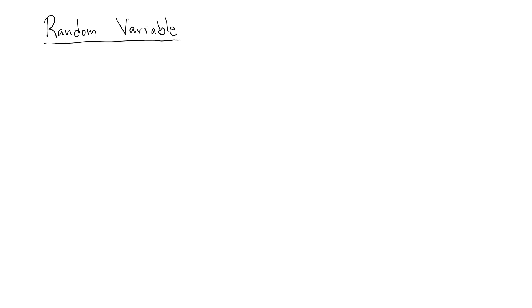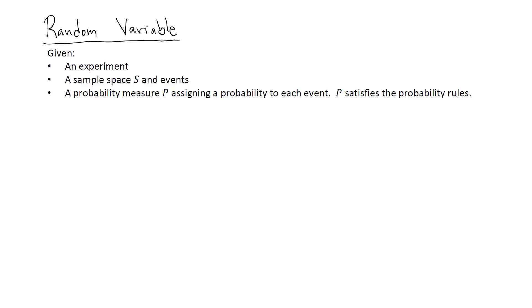Probably the single most important concept in probability theory is that of a random variable. In this introductory lecture we'll have a look at the definition of a random variable — a somewhat simplified definition aiming at capturing the basic idea. We start with an experiment and a sample space S, meaning the experiment will lead to one of the points in the sample space being selected. As a concrete example, suppose the sample space is just the collection of A, B, and C.